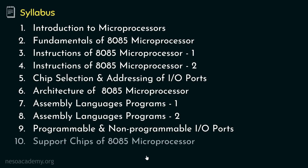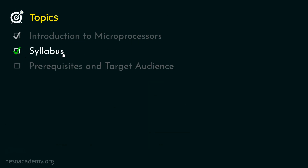Chapter 10, Support Chips of 8085 Microprocessor, is the final and very interesting chapter. We will learn about different support chips: Intel's 8259 Programmable Interrupt Controller, Intel's 8257 Programmable DMA Controller, 8253 Programmable Interval Timer, and Intel's 8251 Universal Synchronous Asynchronous Receiver Transmitter (USART). By the end of this chapter, we will mainly focus on the 8051 microcontroller. So in our syllabus, we are going to have 10 different chapters.